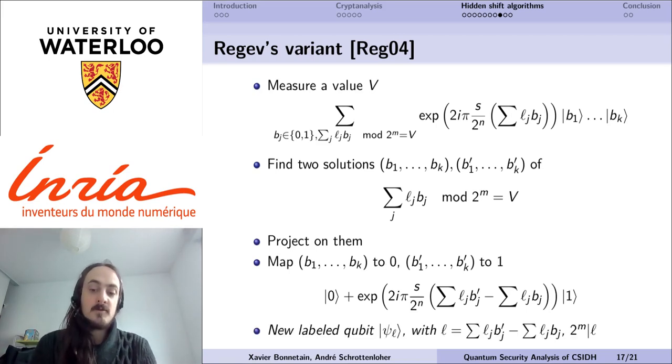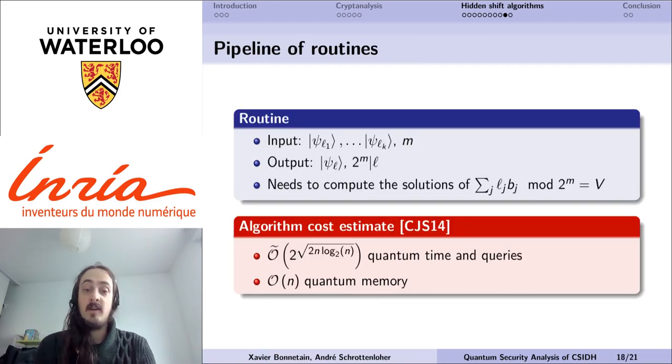In order to obtain an efficient quantum algorithm, we can use as before this method iteratively to obtain labels which are multiples of larger and larger powers of 2. But here we have a huge difference than before, which is that we have a large classical cost which amounts in computing the solution of this equation, which corresponds to the phase of the elements in the superposition.